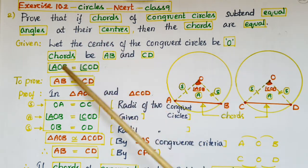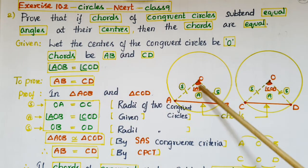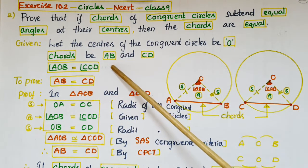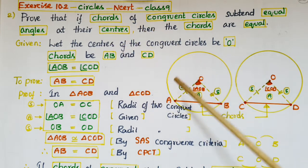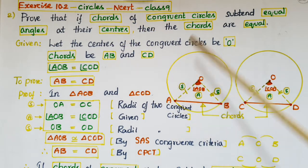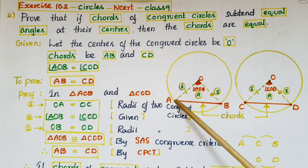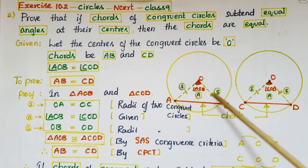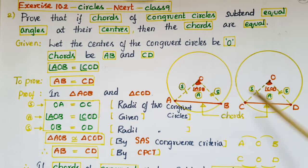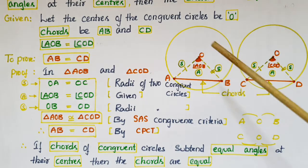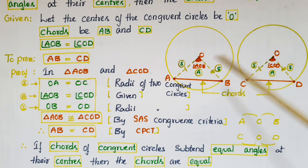Since the chords subtend equal angles, angle AOB is equal to angle COD — that is given. So here we have to prove that the chords are equal, i.e., we have to prove that AB is equal to CD.